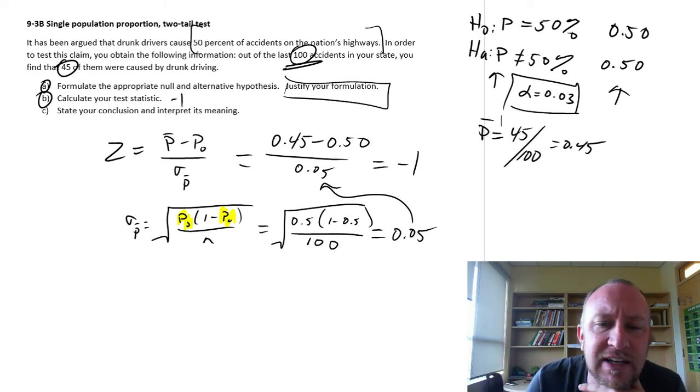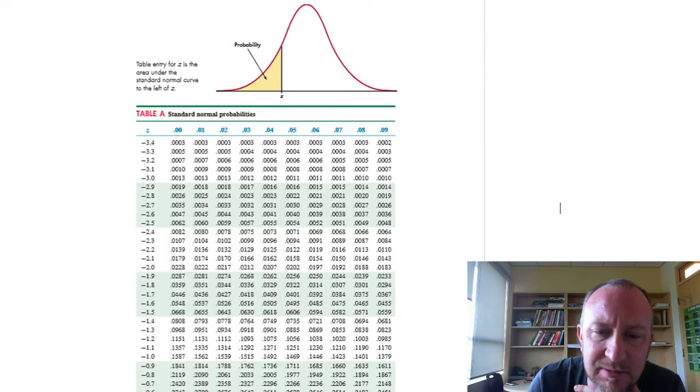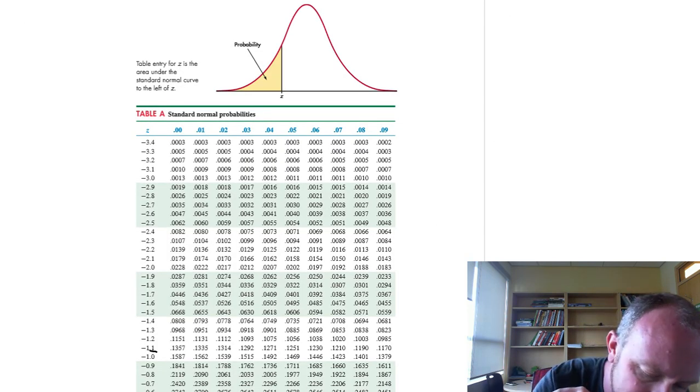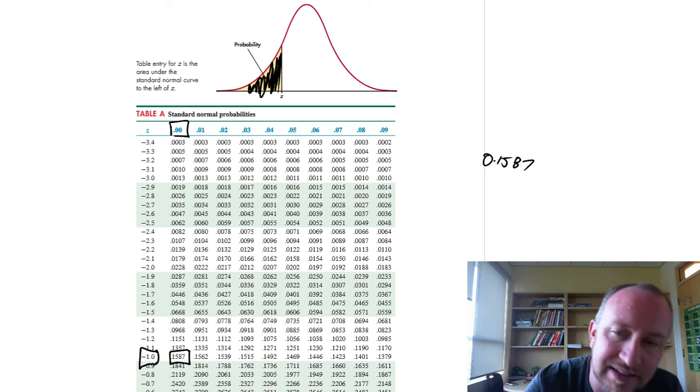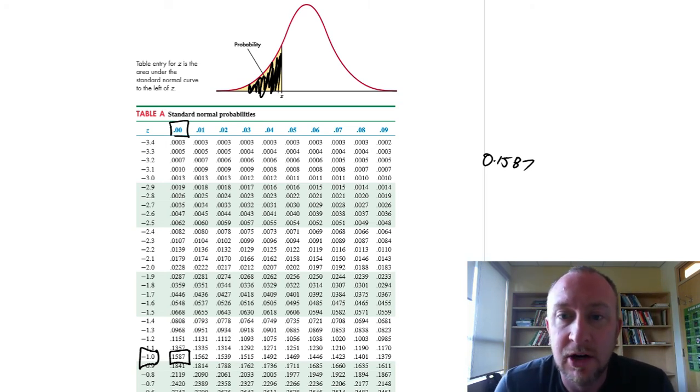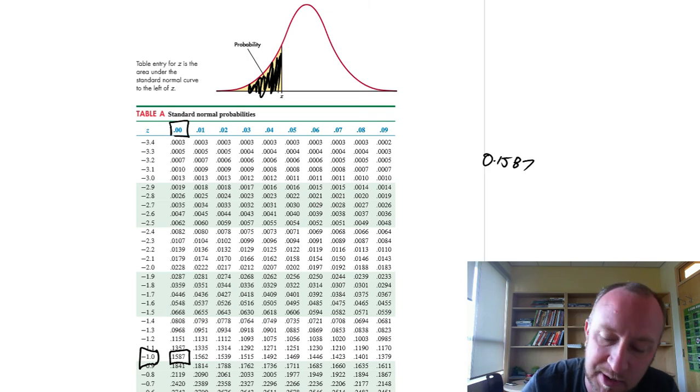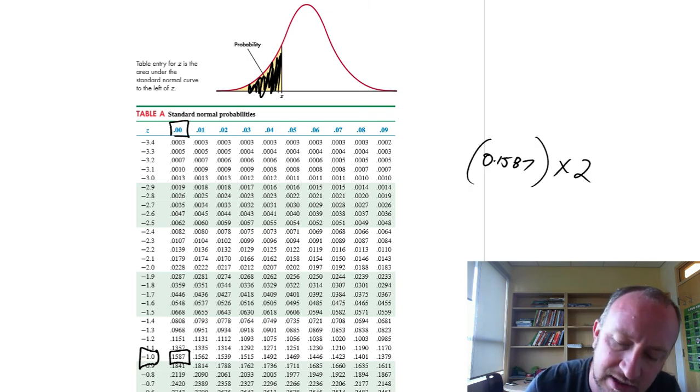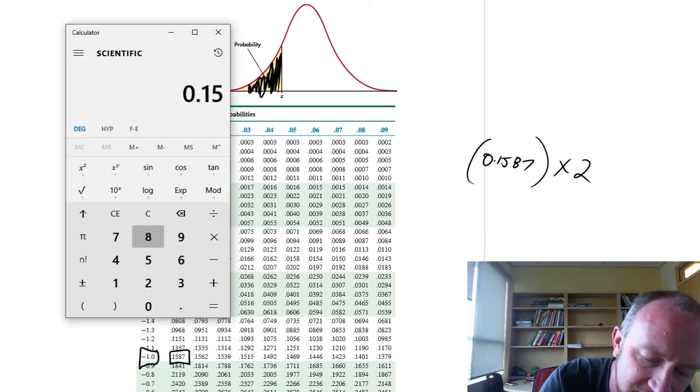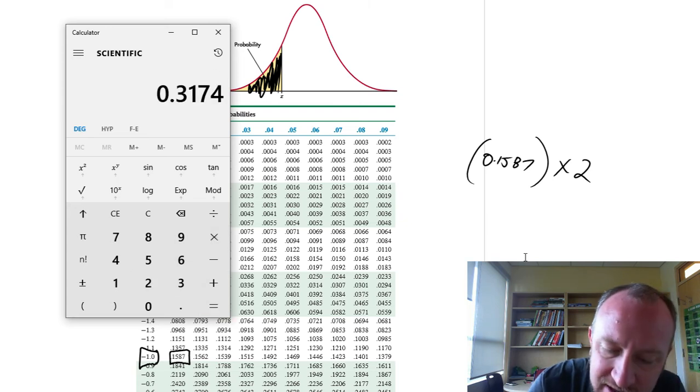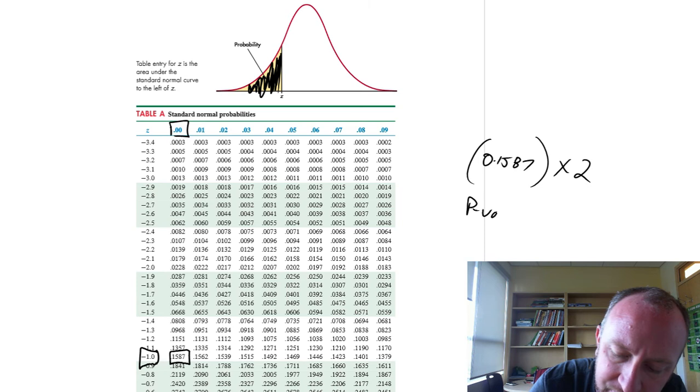So test statistic of negative 1. Let's go to our z-tables, and here's negative 1 right here, and it's exactly negative 1. So that gives us a value of 0.1587 in this lower tail. Now is that our p-value? No, that's not our p-value. This is a two-tail test, remember. Two-tail test multiply that probability by 2. So I pull up my calculator. 0.1587 times 2. My p-value is 0.3174. The p-value is 0.3174.